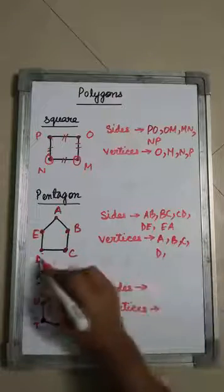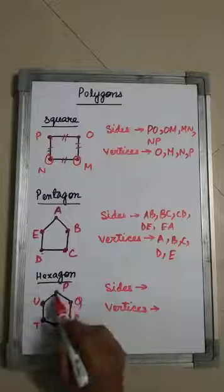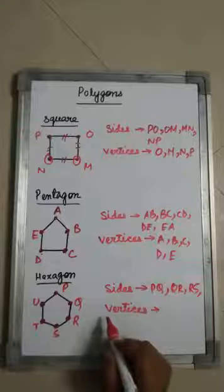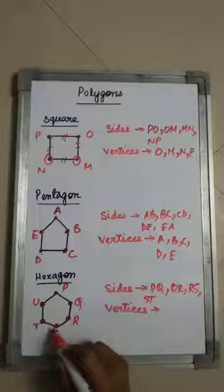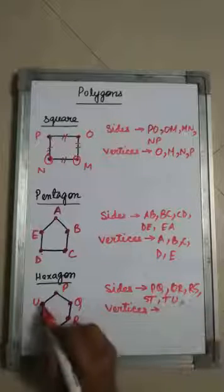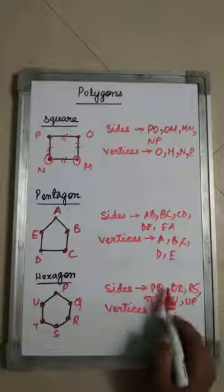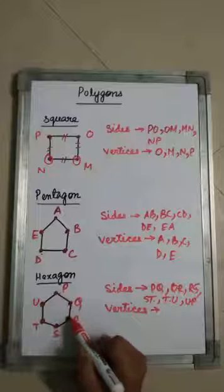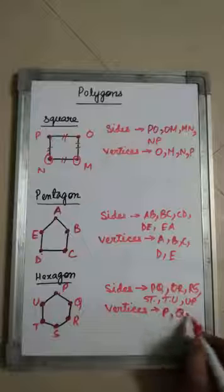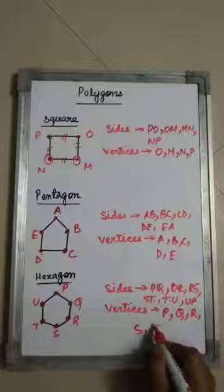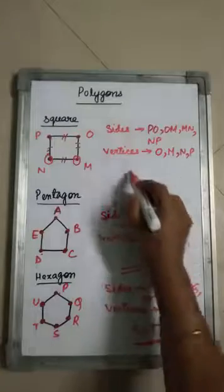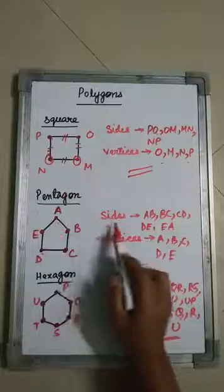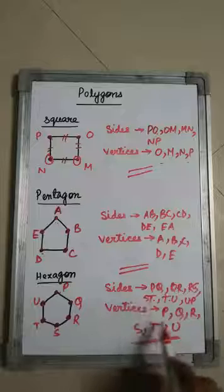For the hexagon, the sides are PQ, QR, RS, ST, TU, and UP — six sides in total. The vertices of the hexagon are P, Q, R, S, T, and U. So to summarize: a square has four sides and four vertices; a pentagon has five sides and five vertices; a hexagon has six sides and six vertices. You have to name the sides and vertices of any given figure.